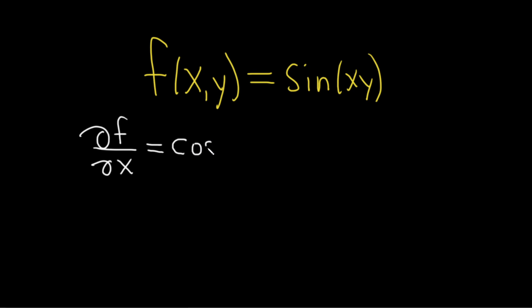And we leave the inside untouched, and then times the derivative of the inside function. So the inside function here is xy, and y is a constant, so the derivative of x is 1, so we're just left with the y.